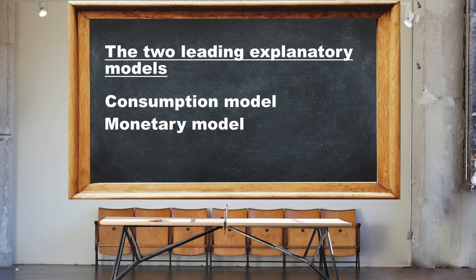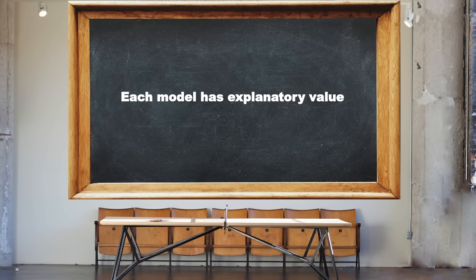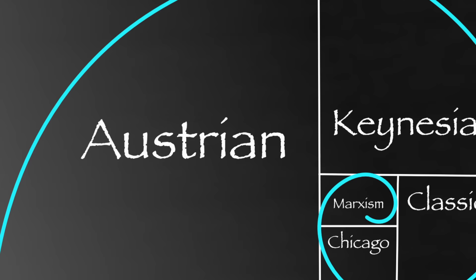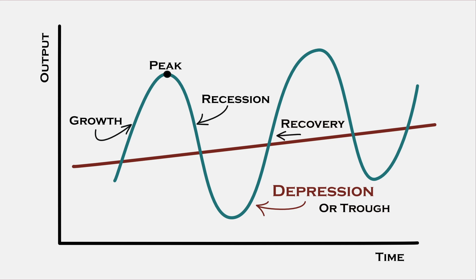Each model has explanatory value. Since economics is a social science rather than a hard science, models are estimated at most to be probable, with degrees of certainty. Models should be viewed not as entirely correct or incorrect, but rather which model has the most explanatory value. Further, with different business cycles, or parts of business cycles, the context is different. Therefore, the contributing causes of the lengthening of the business cycle might be different, depending on what stage of the cycle the economy is in.